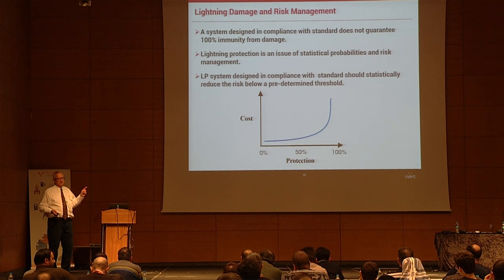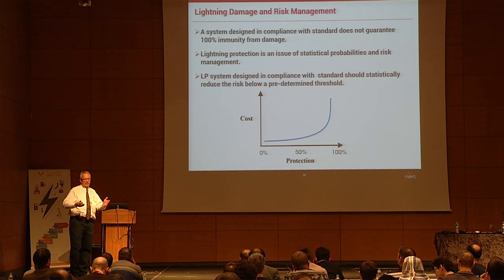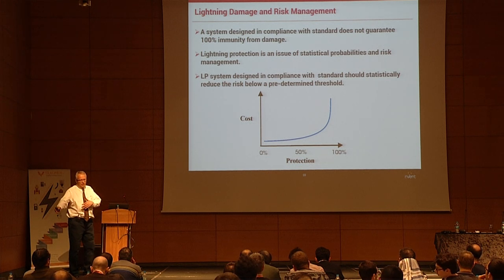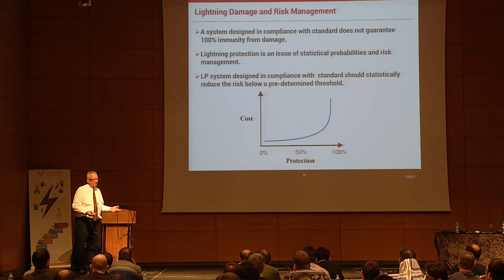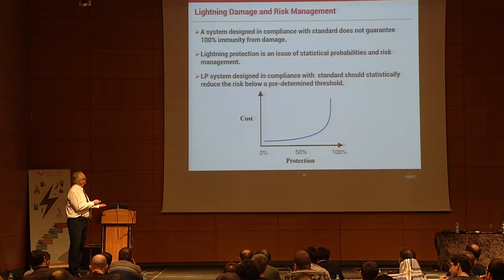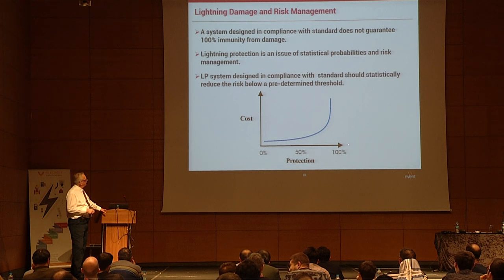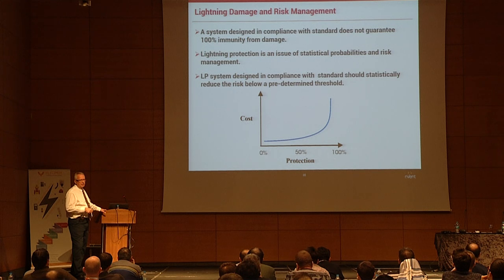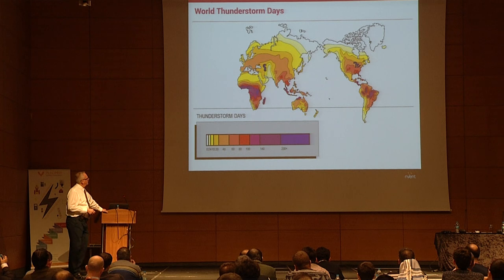Any lightning protection system is like insurance on your car — if you have a Mercedes you want to protect it more than a more economical car. You don't get 100% protection. This is a cost-versus-protection curve: more protection costs more, less protection costs less.